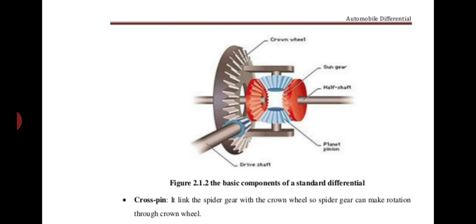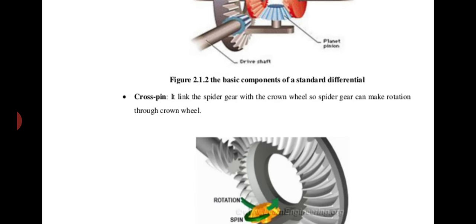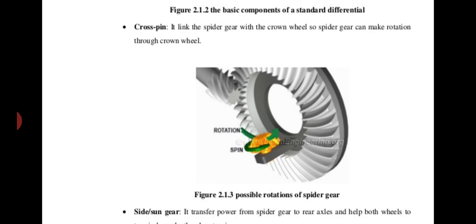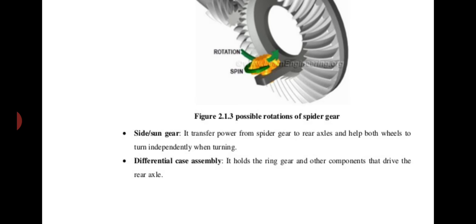Here you can see the basic components of this differential — the crown wheel is there, the spider gear is there, and the entire assembly is visible. This diagram showing the possible rotations of the spider gear is very important. The spider gear is both spinning and rotating — there is a combination of both movements. These are the other parts: side gear, arm gear, and the differential case assembly.